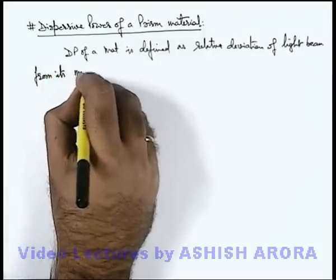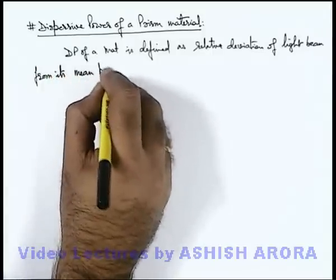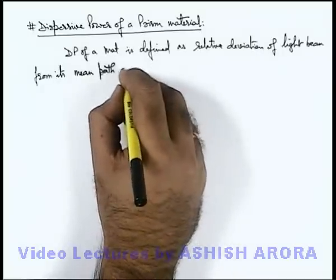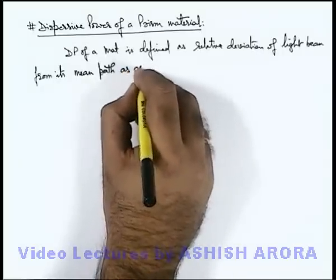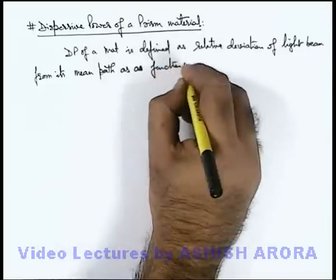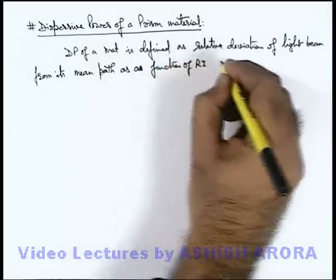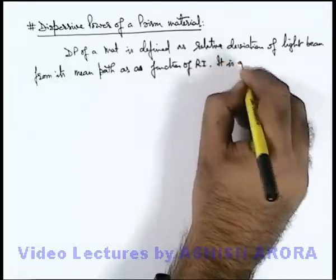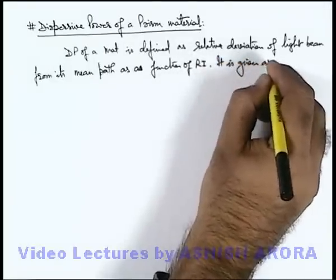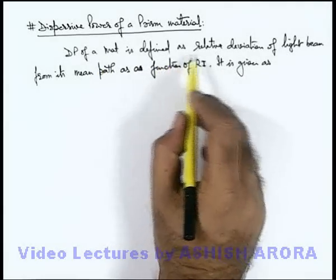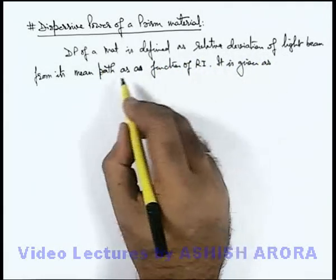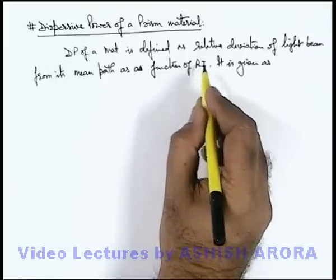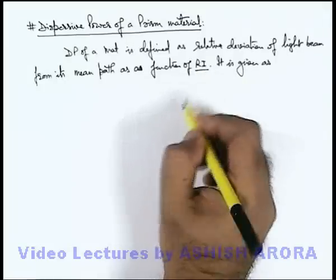From its mean path, that is, along which the light ray passes if it is monochromatic. But here we can write it as a function of refractive index. You must keep in mind that dispersive power is the relative deviation of light beam from its mean path as a function of refractive index, because we already studied that refractive index varies with wavelength.